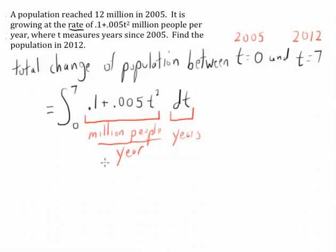So you can see that we're going to have something good happen here. We're going to have years here, cancel with the year there, and our answer will be in terms of million people. That's a good check that the integral is giving us exactly what we want, the total change in population.